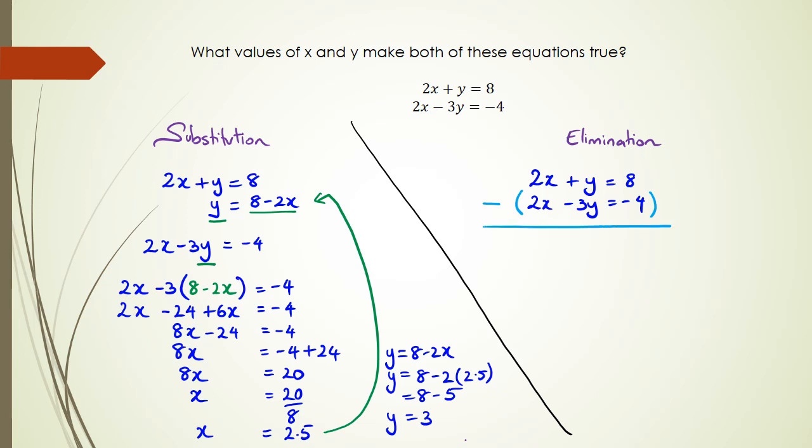So that means 2x minus 2x, well that's eliminated. Y minus negative 3y would be 4y, and then 8 minus negative 4 would be positive 12. So there you go, 4y equals 12, which means y is equal to 3.